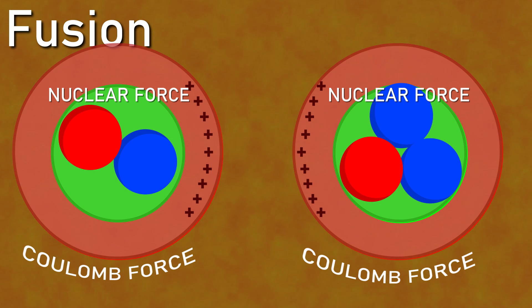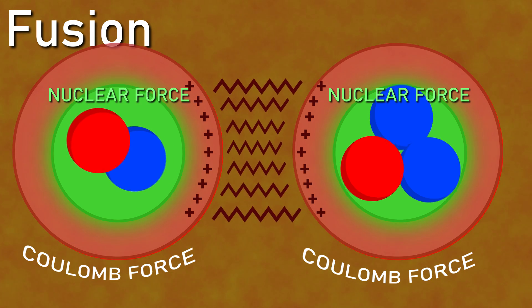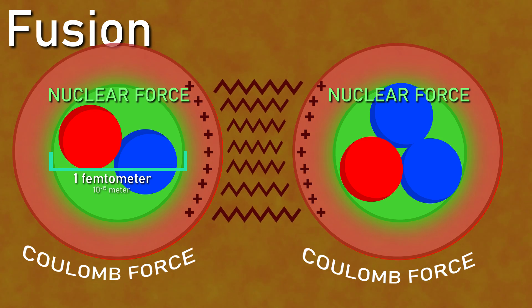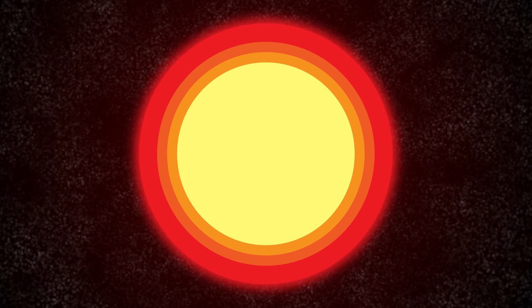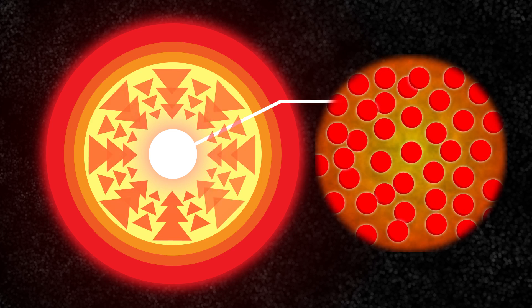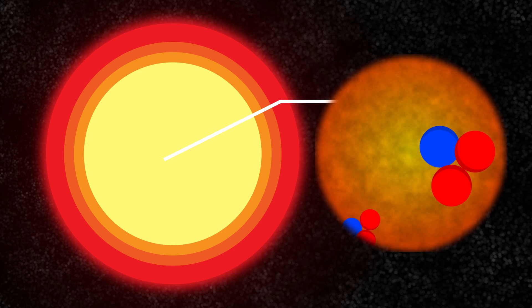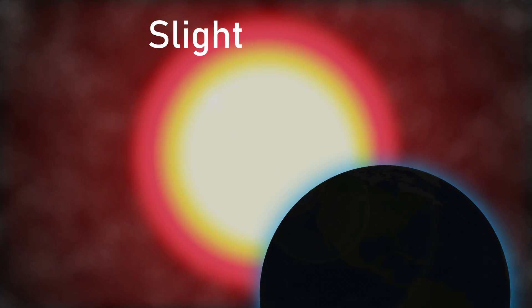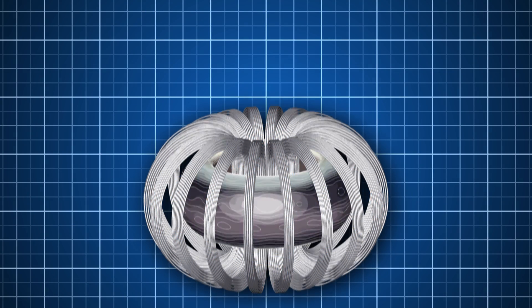Protons are positively charged, which means they repel each other — this is the Coulomb force. There is another stronger force though: the nuclear force, which allows the protons to combine. This force, however, is only strong at very small distances, so for two nuclei to combine there is a huge energy barrier that must be overcome. These conditions are met inside the core of the sun, as it's so huge that the pressure and heat in the core essentially squeeze the nuclei together. When two small nuclei fuse, a ton of energy is released — it's this energy that powers the sun. We can't just take a piece of the sun back to earth; the fusion works precisely because the sun is so huge. So if we want to use fusion energy on earth, we'll have to find different ways to create the conditions necessary for fusion to happen.